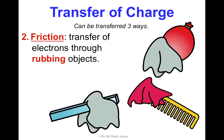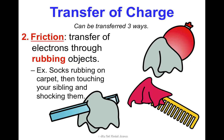Another way we can transfer charge is by friction. If you've done the lab stations in class already, you've experienced this — you're transferring electrons through rubbing objects together to get that buildup and get those electrons excited. This is like rubbing socks on carpet and then shocking your sibling, or rubbing the balloon. These are all ways of charging by friction — a little more specific than conduction because we're actually rubbing to build up that charge.